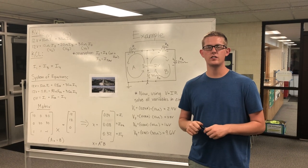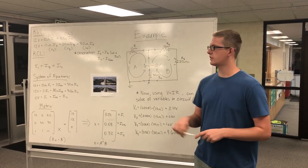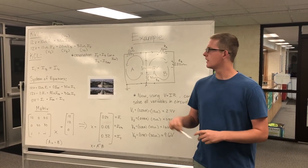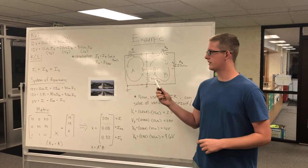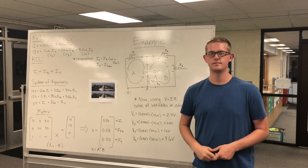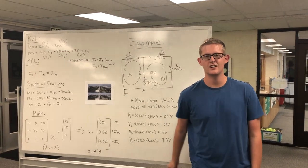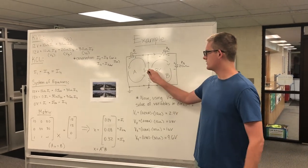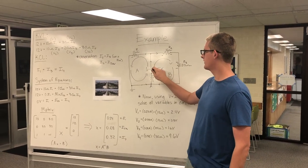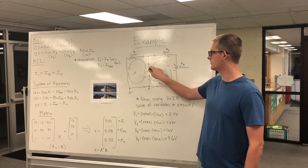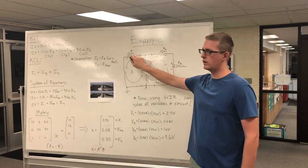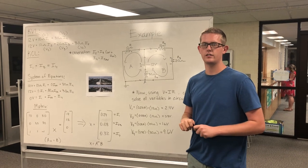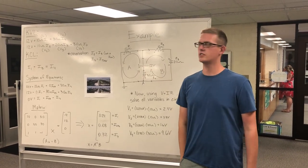We will now look at how we can use Kirchhoff's voltage and current laws to solve different variables within this complex DC circuit. First, we'll look at Kirchhoff's voltage law. Can anyone give me an equation using loop A and Kirchhoff's voltage law? Starting at the voltage source and going around this loop, the 12-volt rise is going to be equal to the voltage drop across resistor R1 and the voltage drop across resistor R4.